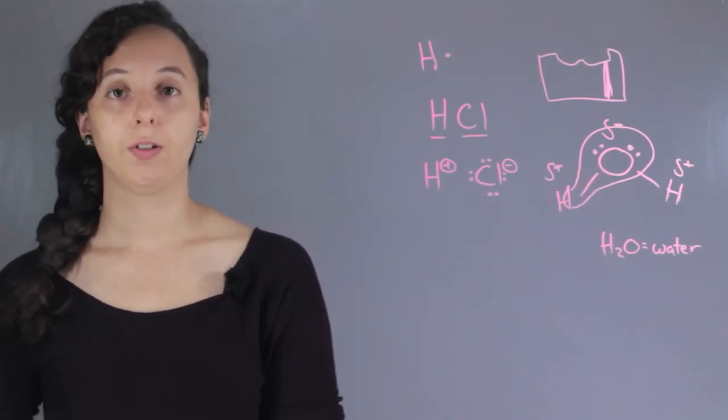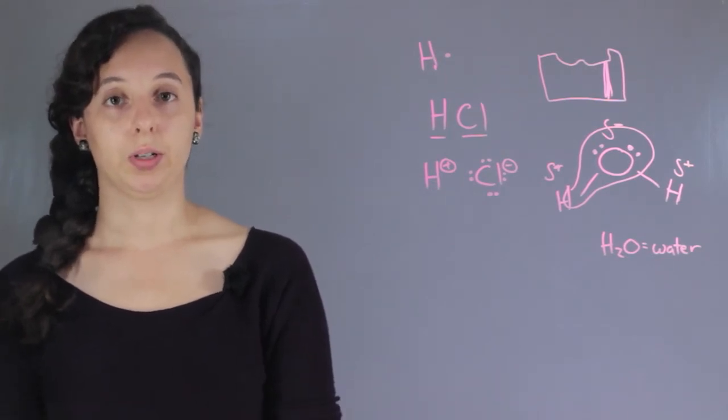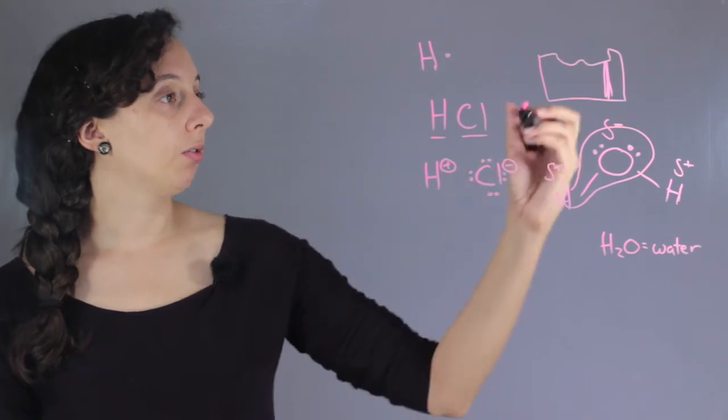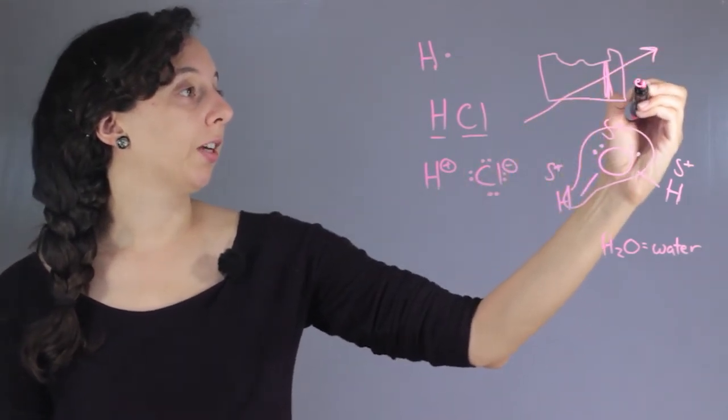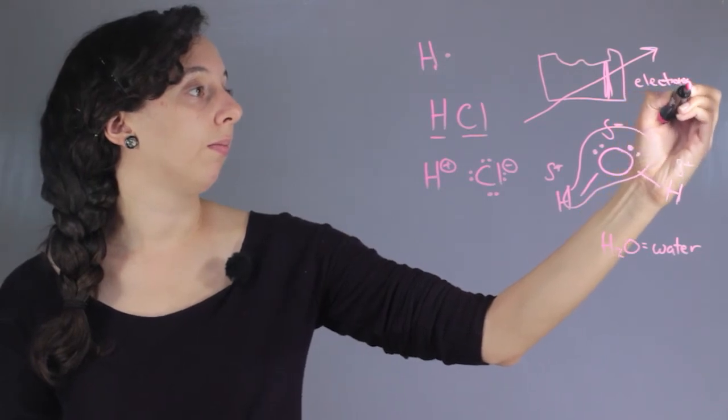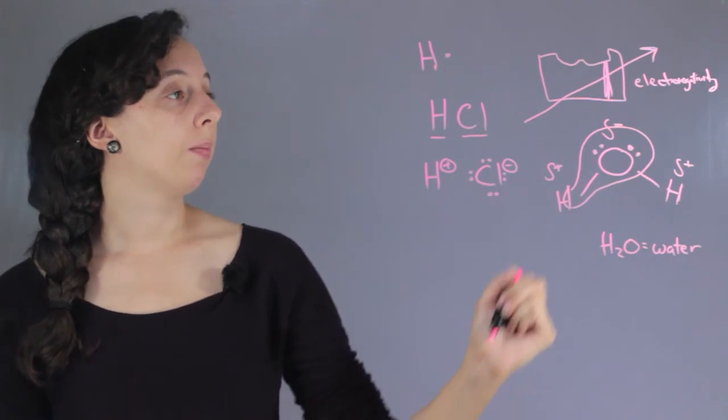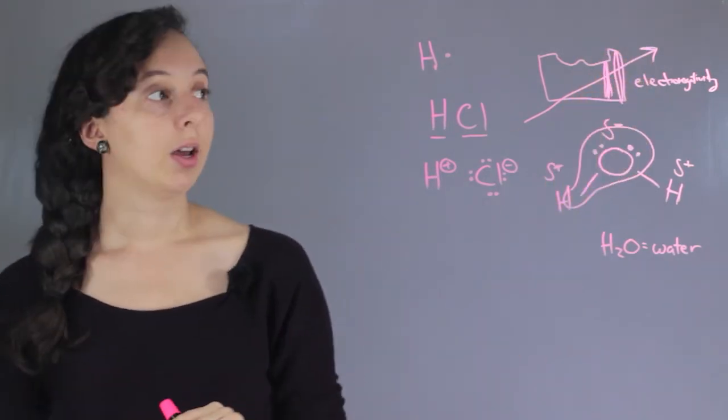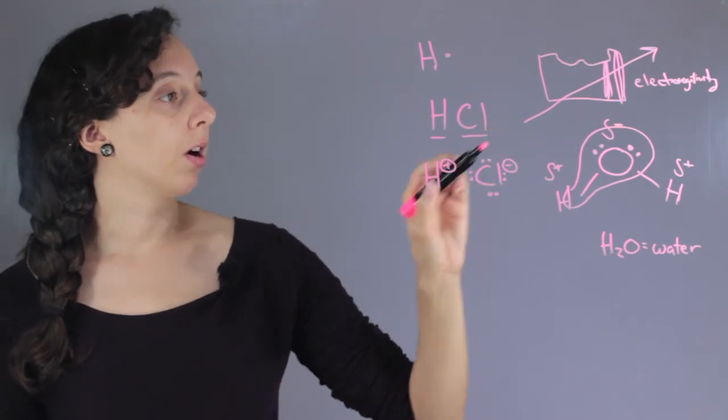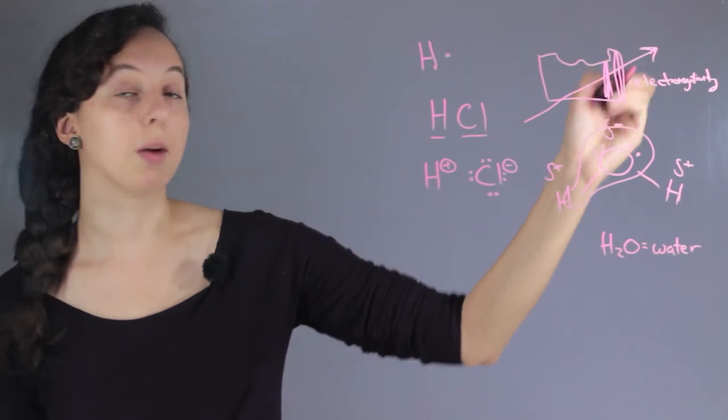If you ever want to compare what's going to take electrons versus what's going to give them up, it's a good general trend to note about the periodic table that electronegativity works like this. Aside from the noble gases, which is the last column, electronegativity increases going from the bottom left to the top right.